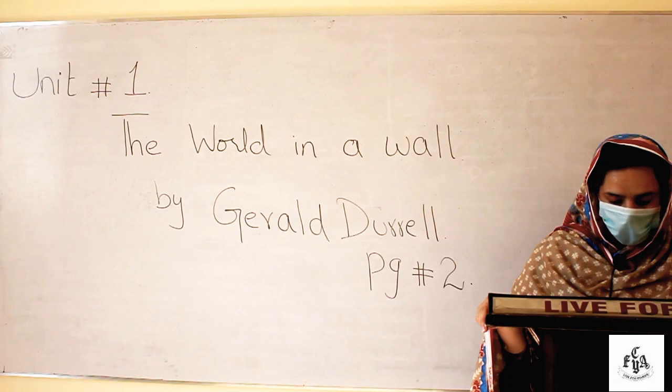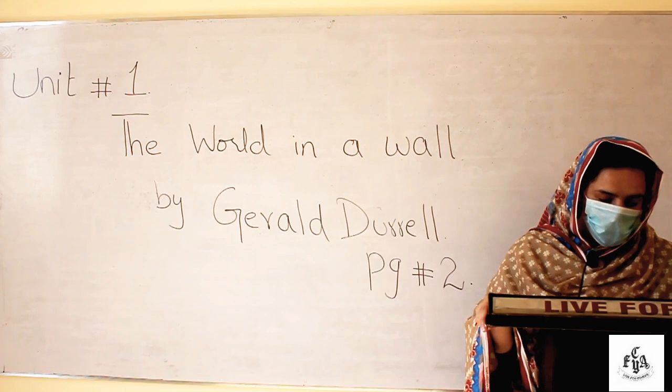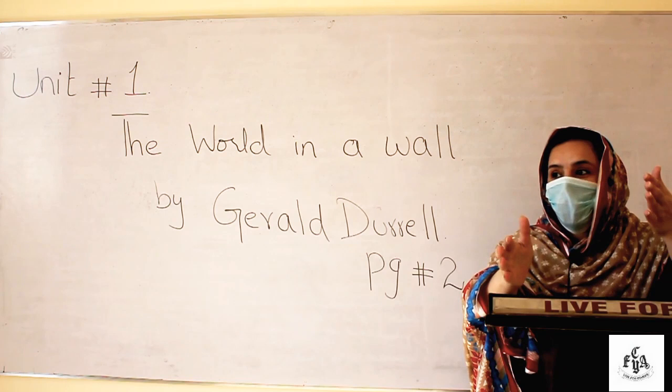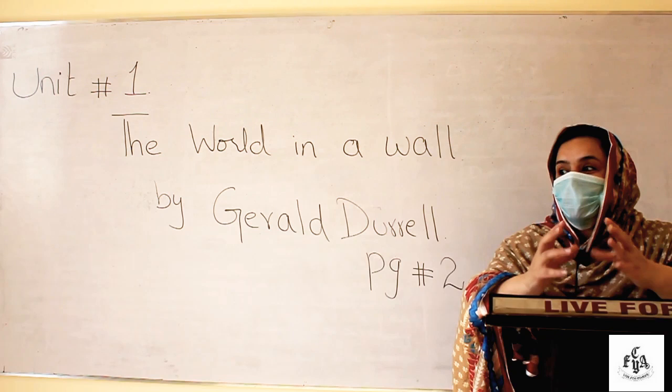'The whole surface was an intricate map of cracks, some several inches wide, others as fine as hair, and here and there large pieces had dropped off and revealed rows of rose-pink bricks lying beneath.' Here the writer is explaining that particular wall which he thinks is a hunting ground, where he can find different animals.